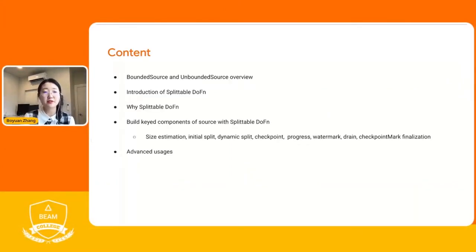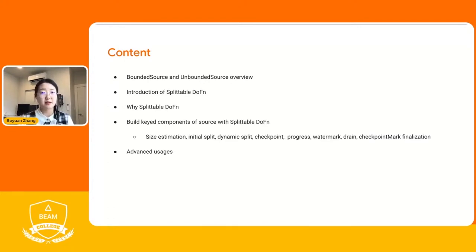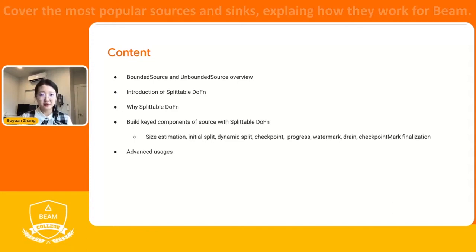We are going to cover several topics here. Because we're going to dive into the details of building a source, I'm going to compare every aspect of the existing bounded source and unbounded source API with Splittable DoFn API. Before we dive into the details, I will first talk about what is a bounded source and what is an unbounded source, and introduce a little bit more on what is Splittable DoFn and why we want to use it. Then we dive into the details, and if we still have time left, I will introduce some advanced usages of building source on top of Splittable DoFn.